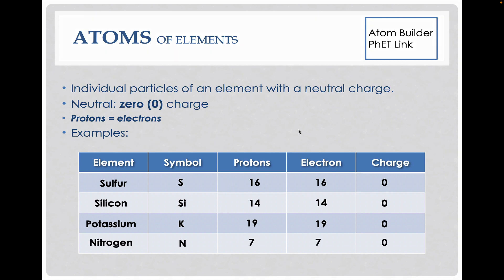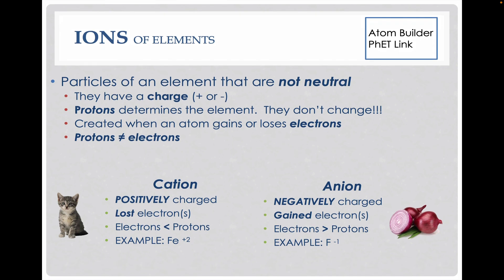We also have particles called ions inside elements. Now ions are charged particles, they are not neutral. Because the proton determines the element, we're not going to change the proton, we're only going to change the electrons. So in this case, protons will not equal electrons.